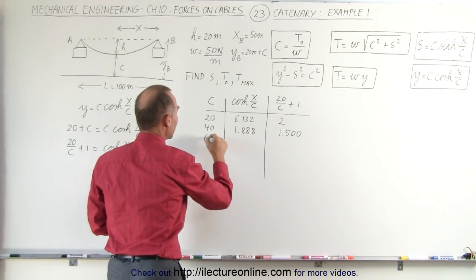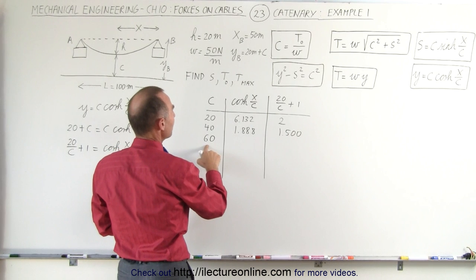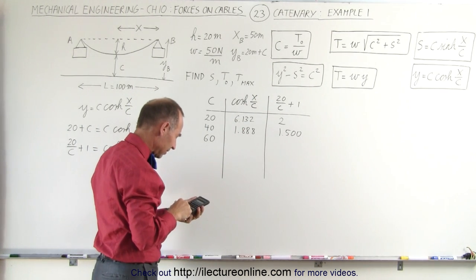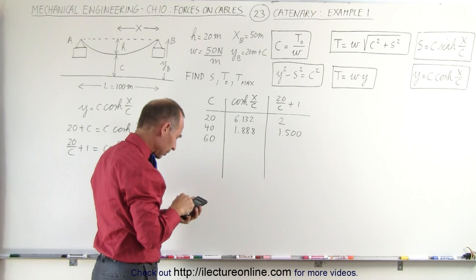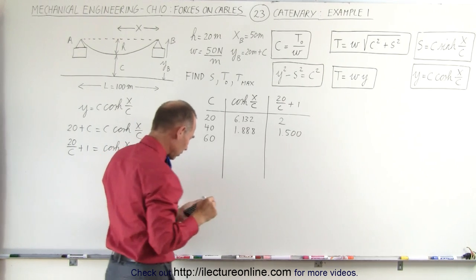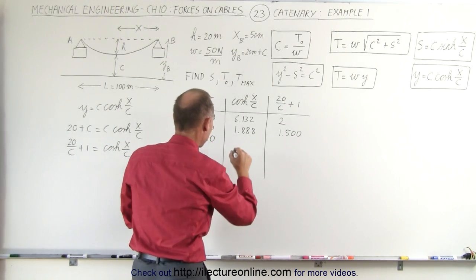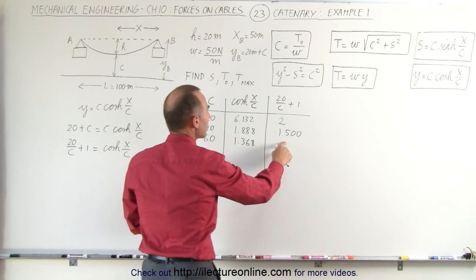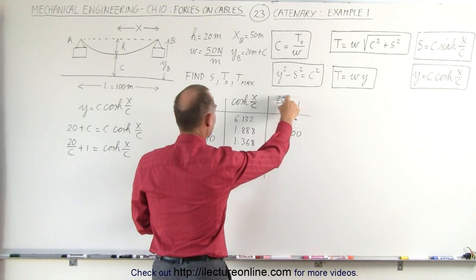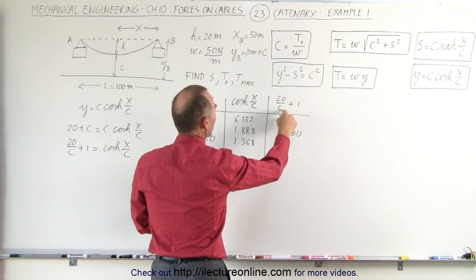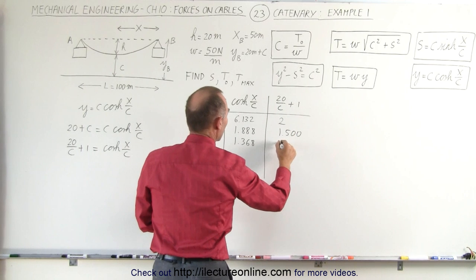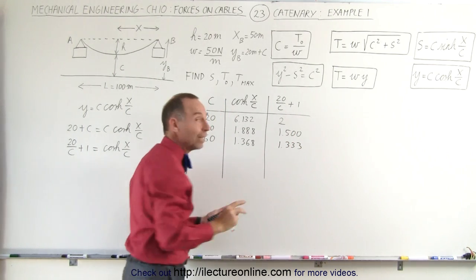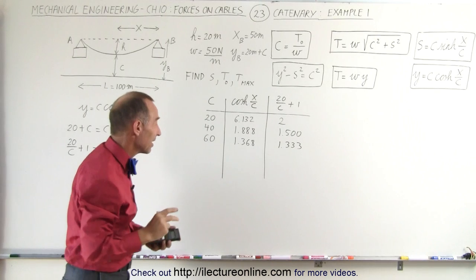Let's try C=60: 50/60 = 5/6, cosh(5/6) = 1.368. On the left: 20/60 plus 1 = 1/3 plus 1 = 1.333. We're getting very close, but not quite there yet.